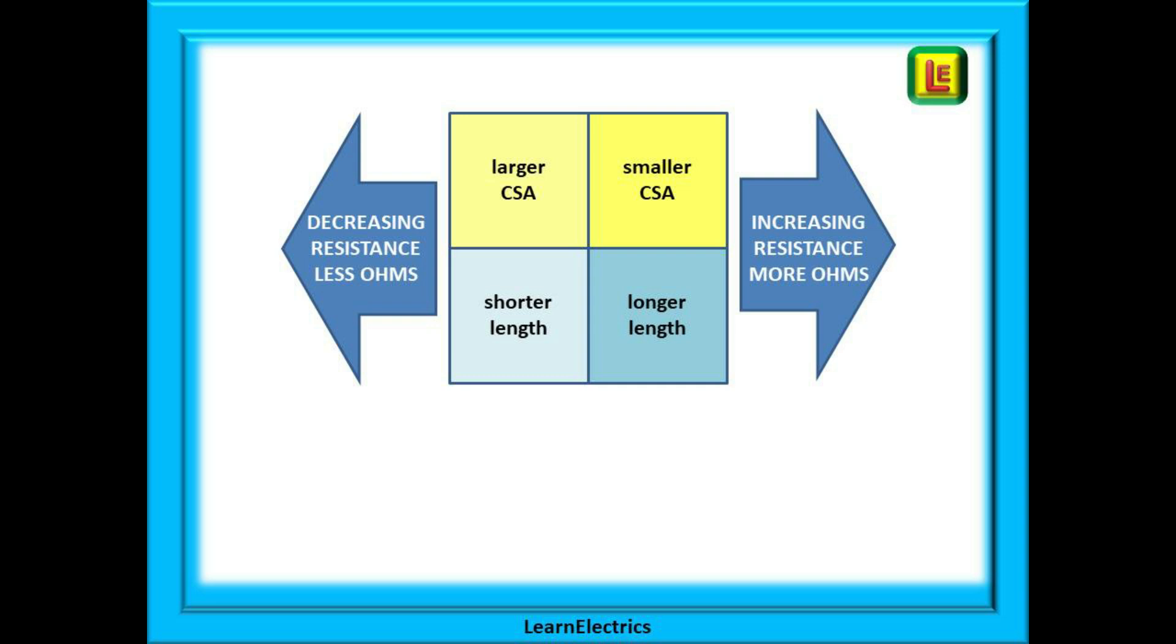First we need to know the main factors that affect a conductor's resistance. We are dealing only with copper cables here and we are assuming room temperature for our calculations. This drawing shows what effects changing the size or cross-sectional area of a conductor will have on the resistance, and also what happens if you change the length of the cables.